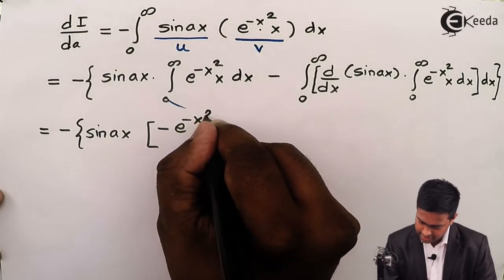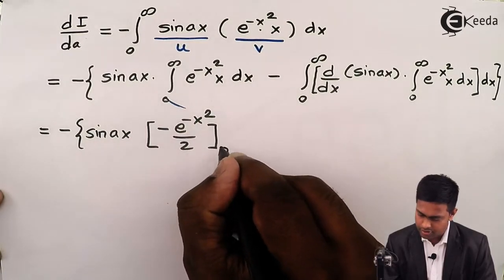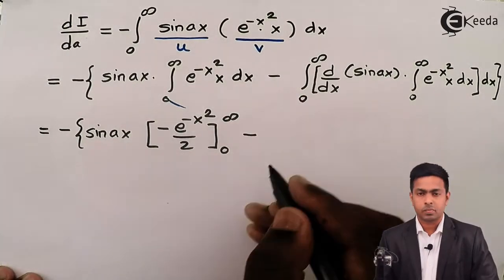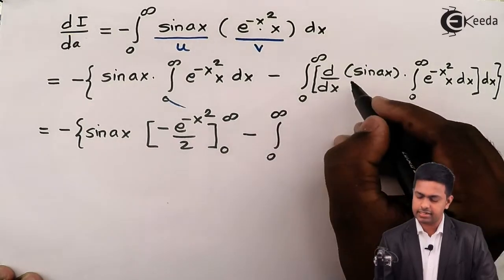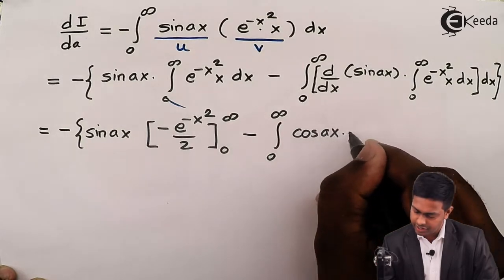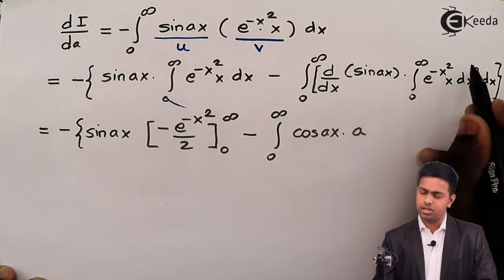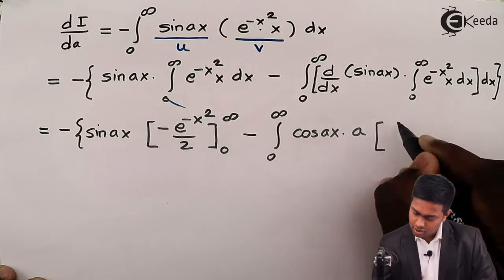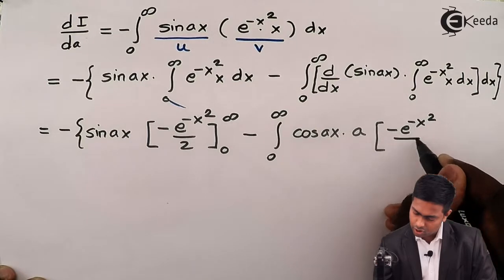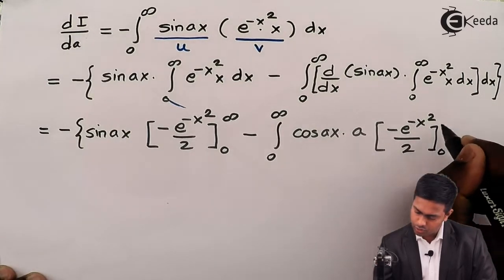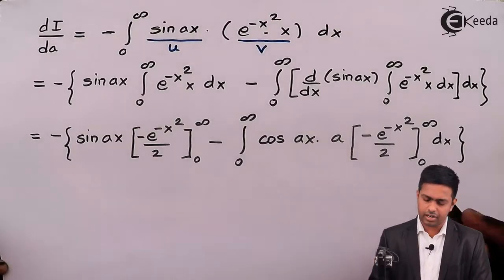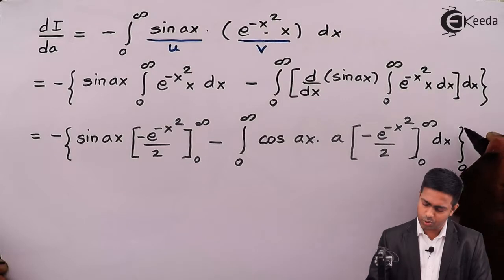We write the integral of this term as minus e^(-x²)/2, evaluated from 0 to infinity. Then minus the integral from 0 to infinity, where the derivative of sine(ax) is a·cos(ax), and the remaining integral is minus e^(-x²)/2, all from 0 to infinity, times dx — with the outer integral from 0 to infinity.